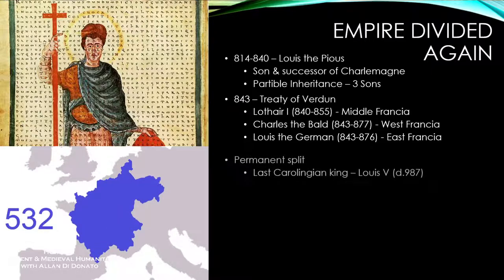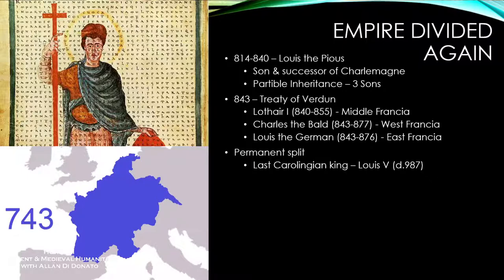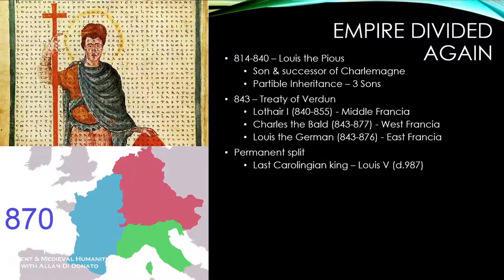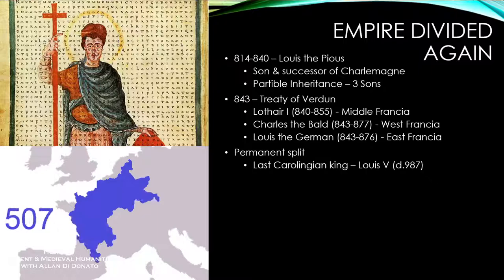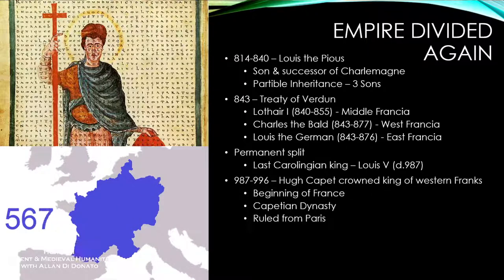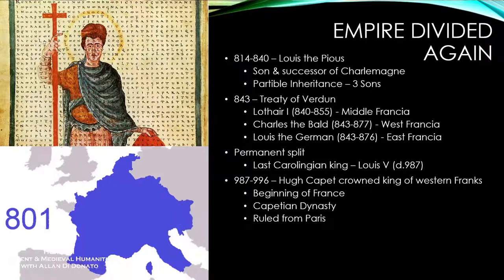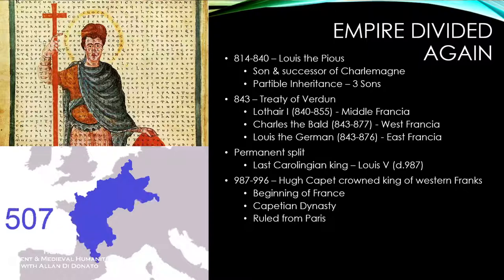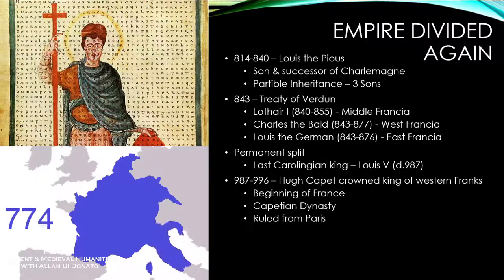There was a permanent split at this time — the empire was never going to come back together. The last Carolingian king was Louis V. By 987, the Carolingians were done. What happened in 987 was a new family emerged in West Francia: Hugh Capet was crowned king of the Western Franks from 987 to 996, beginning the Capetian dynasty — actually a minor branch of the Carolingian family. Hugh Capet began gathering power from different feudal lords, taking back land, and developing the nation of France, ruling from Paris.